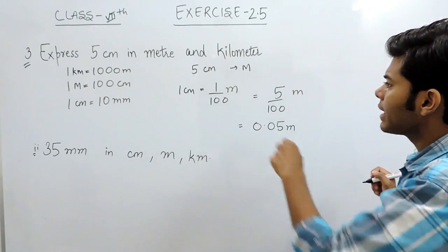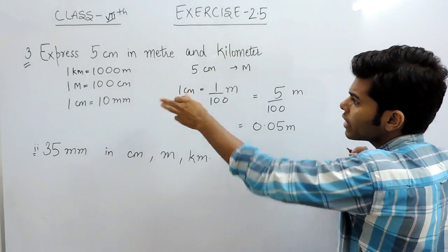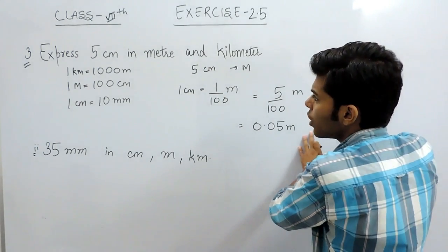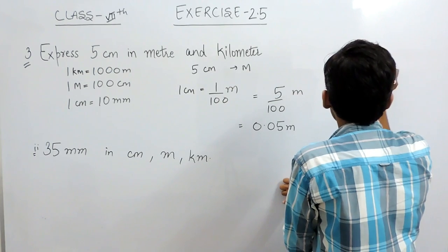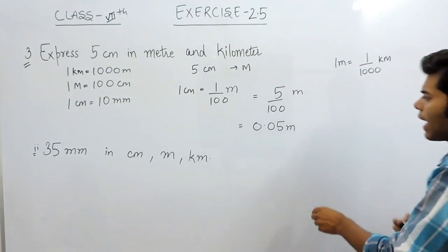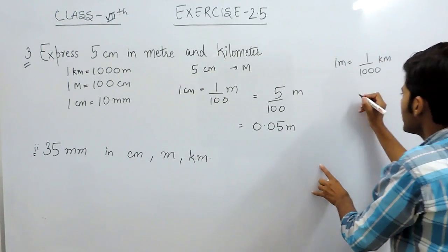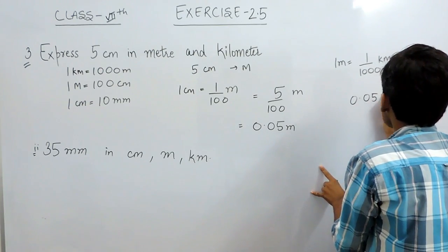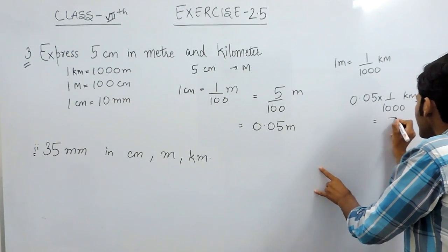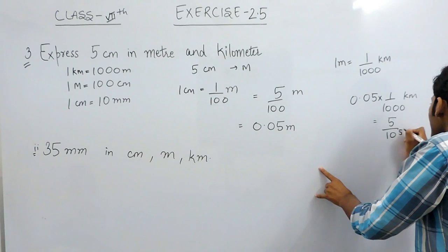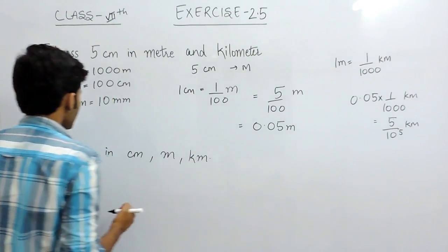Now we have to convert this 5cm in kilometer. We have already converted it in meter and now we have to convert it in kilometer. We can see that 1 meter is equal to 1 upon 1000 km. So this meter can be replaced by this unit and it will be 0.05 multiplied by 1 upon 1000 km, and that will be 5 upon 10 to the power 5 km. This is the answer of part 2, which is to convert it in kilometer.